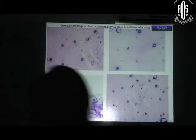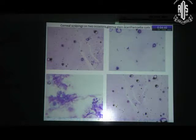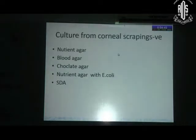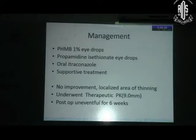One of the scraping slides initially showed structures which were interpreted as Acanthamoeba cysts, along with multiple inflammatory cells. We did four sets of scraping cultures, all of which showed nothing. The patient was put on PHMB, biguanide, and oral itraconazole. Since there was no improvement, she underwent therapeutic keratoplasty.